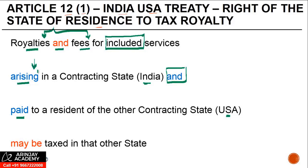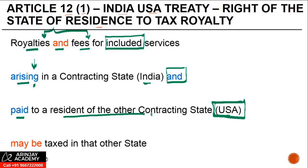The meaning of 'arising' is also given within the treaty itself and will be a subject of our discussion. Not only must the royalty arise in a contracting state, it must also be paid — if it is only arising but not paid, the tax liability in the hands of the non-resident does not arise. But if the royalty is arising and paid to a resident of the other contracting state, which is the USA, then such royalty or fee for included services may be taxed in that other state, i.e., the USA.